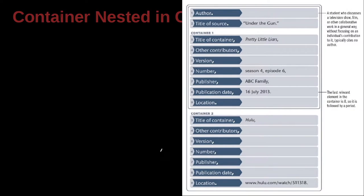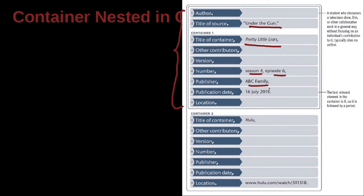Here we have this nice MLA graphic. Then we're going to say: 'Under the Gun,' Pretty Little Liars, Season 4, Episode 6, ABC Family, 16 July 2013. This is another kind of interesting case where we don't have an author. What we do have is the name of a TV show — actually, this is an episode. It's inside a TV show called Pretty Little Liars. It appeared on Season 4, Episode 6, because they have seasons and episodes. The publisher is ABC Family, and this was the day that it aired. And here we have another special little thing, which is Hulu — Hulu is an online service like Netflix.